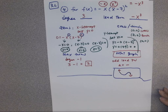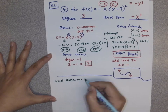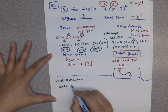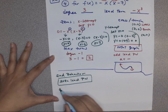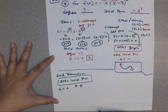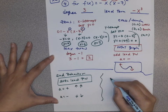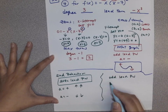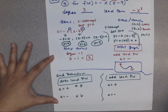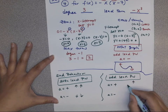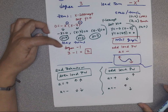Let's review end behavior. For even leading power: if a is positive, both sides up like an open-up parabola; if a is negative, both sides down like an open-down parabola. For odd leading power — think of the s-curve y = x³ — if a is positive, left down right up; if a is negative, we flip it. Maximum turns is always degree minus one.